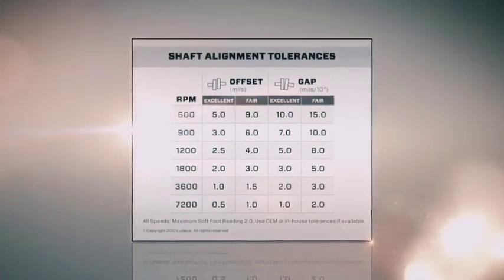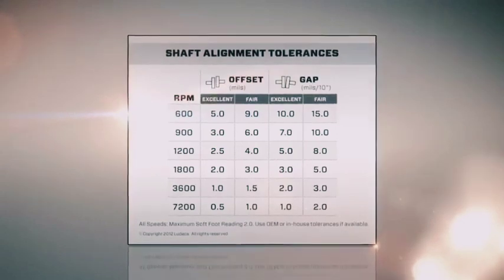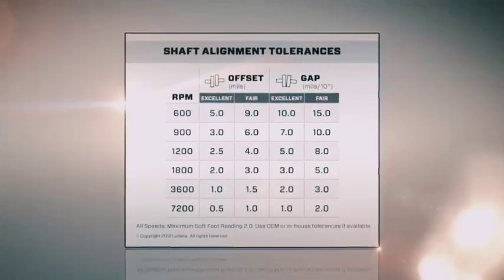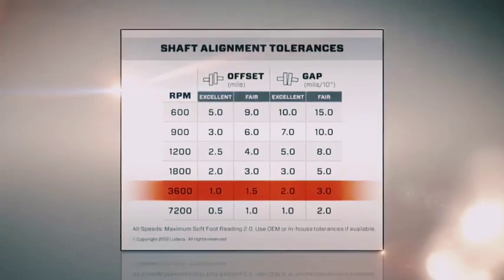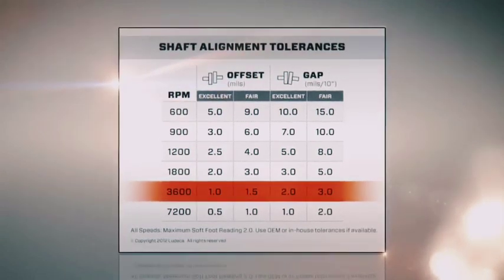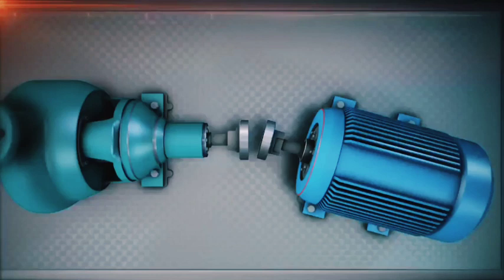Because alignment is so important, tolerances were developed to define the most misalignment you can have and still be okay. We will explain about these tolerances in a future video. If this was a 3600 RPM motor, these would be the tolerances.